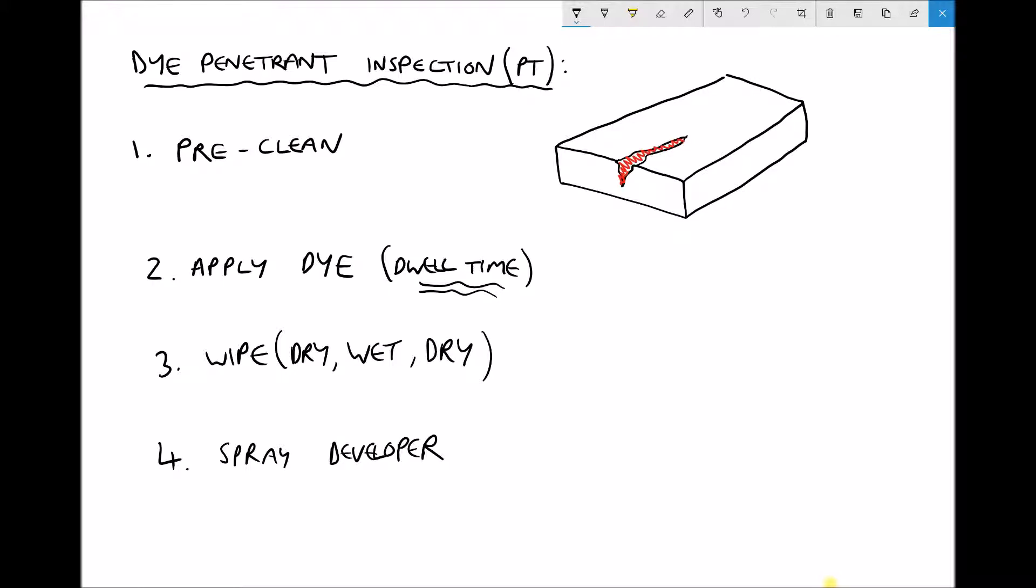After the dwell time we need to wipe the surface. Recall that although the dye will have seeped into the cracks, there will still be some residue on the surface. When we wipe the surface we use a dry wet dry method. First a dry cloth is used to remove any surplus. Then a wet cloth is used, again to remove any surplus that's still on the surface. And finally a dry cloth is used. It's important not to over wipe the surface because what we don't want to do is draw the dye back out of the cracks.